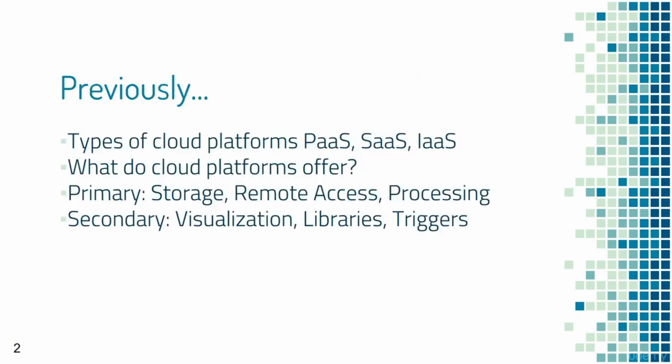We looked at the different types of cloud services: Platform as a Service, Software as a Service, and Infrastructure as a Service, discussing what functionality each offers in the context of the Internet of Things. We also looked at what cloud platforms offer — primarily storage and remote access to data, an application framework to process the data, visualization of data, libraries to write applications, and triggers based on certain data values.